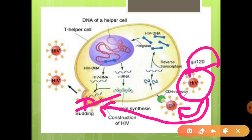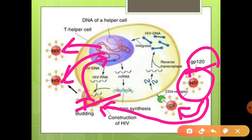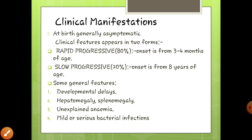After entering into the cell, the single-stranded RNA, through the enzyme reverse transcriptase, leads to the formation of double-stranded DNA. From this double-stranded DNA, the infected cell genome causes more and more formation of HIV viruses, which then induces infection in more and more cells.